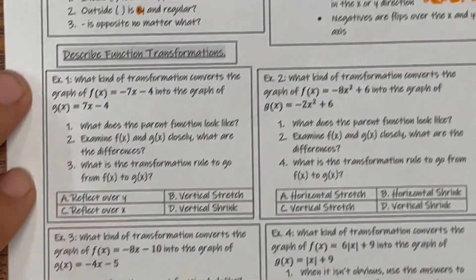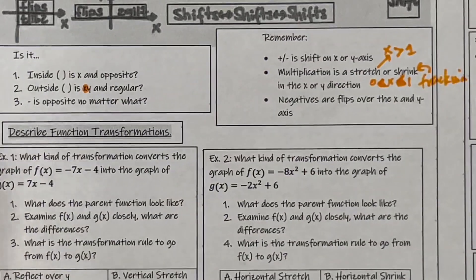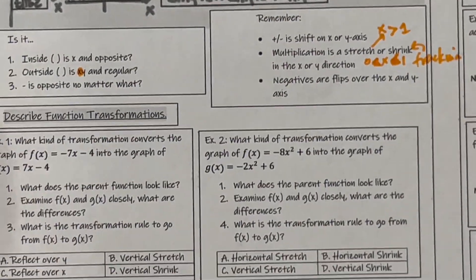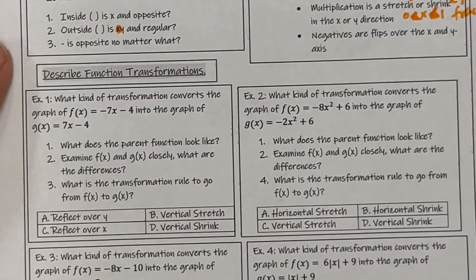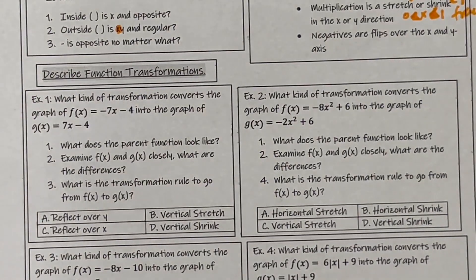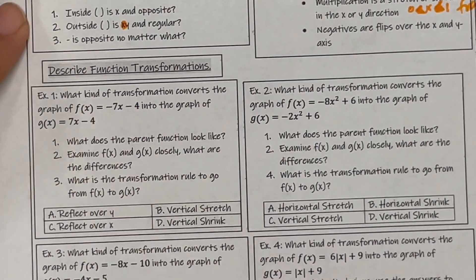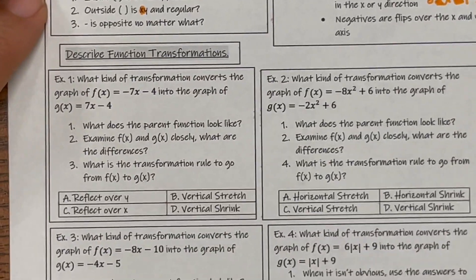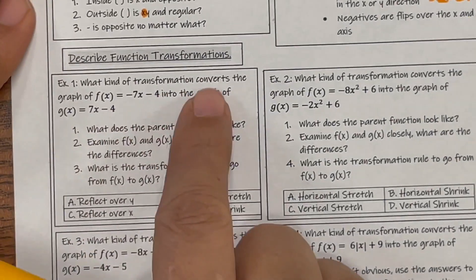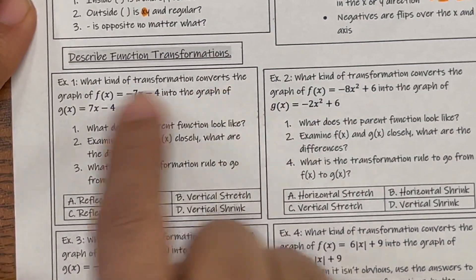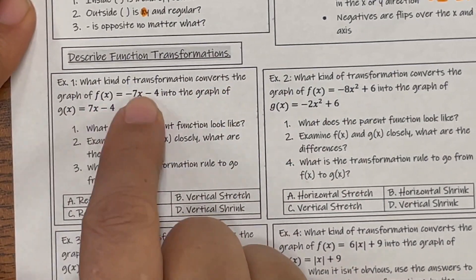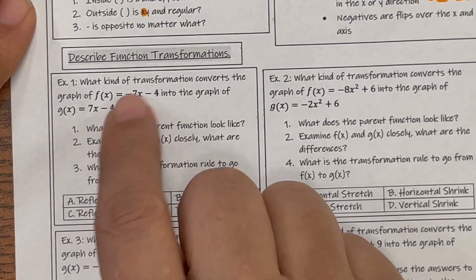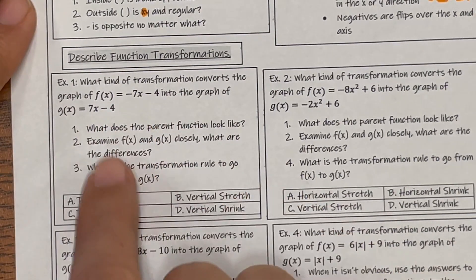Once you have a good grasp on that, you can apply these rules to these questions. I'm also going to show you how to do it the long way for a couple of examples. So let's start with the first example: what kind of transformation converts this graph into this graph? Look at the difference.